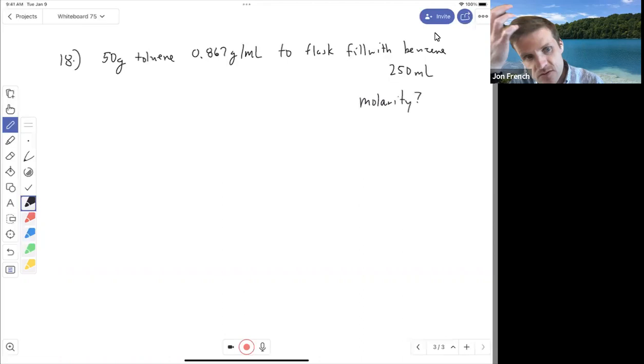Because we know the total volume of the solution. We know the final volume of the solution is 250 milliliters, and we know the mass of the toluene that we're adding.